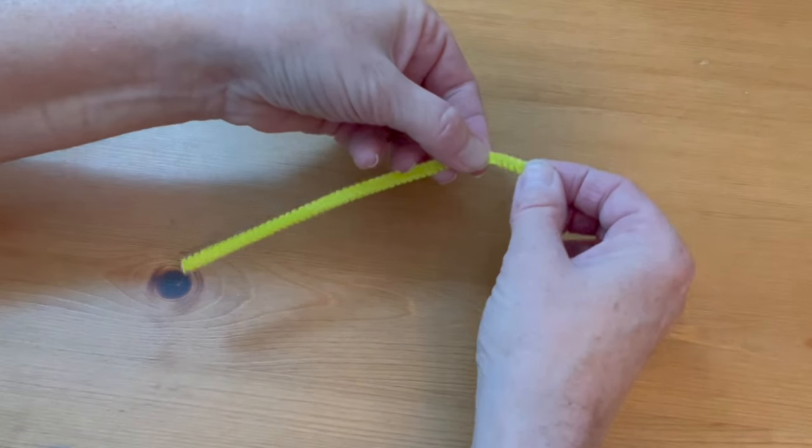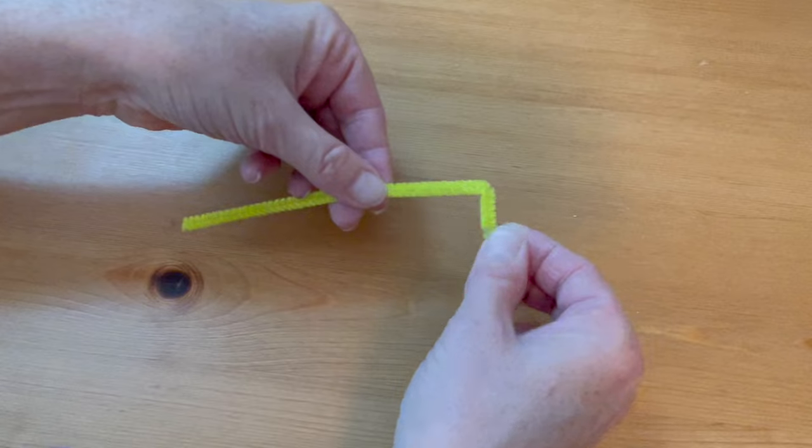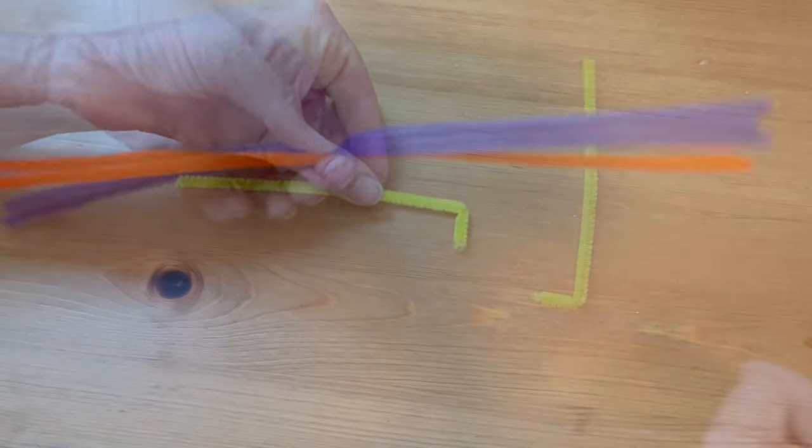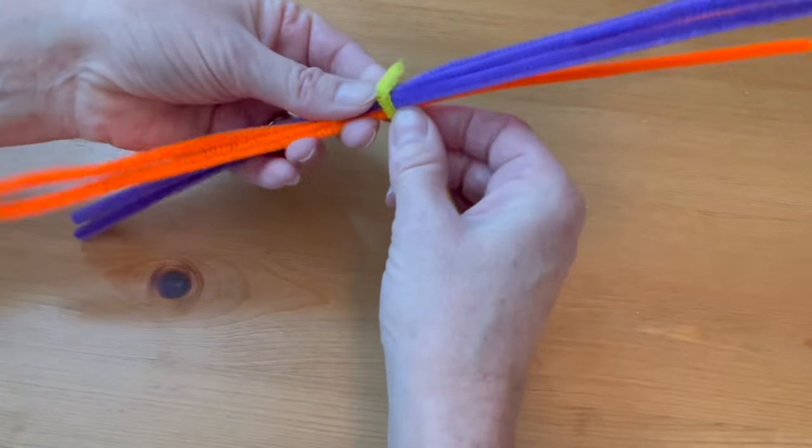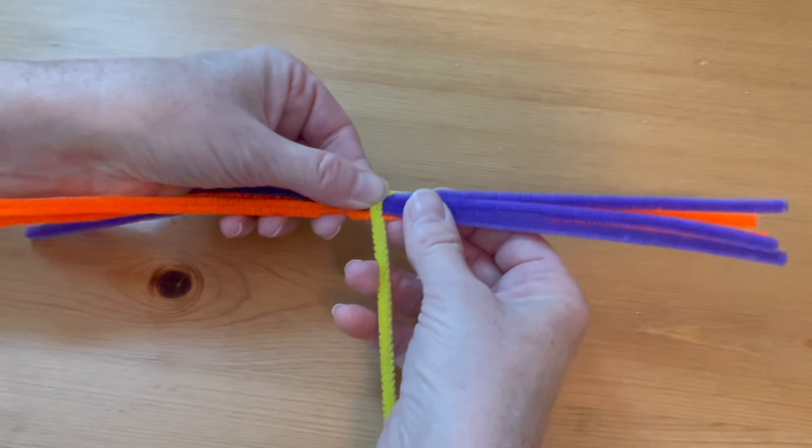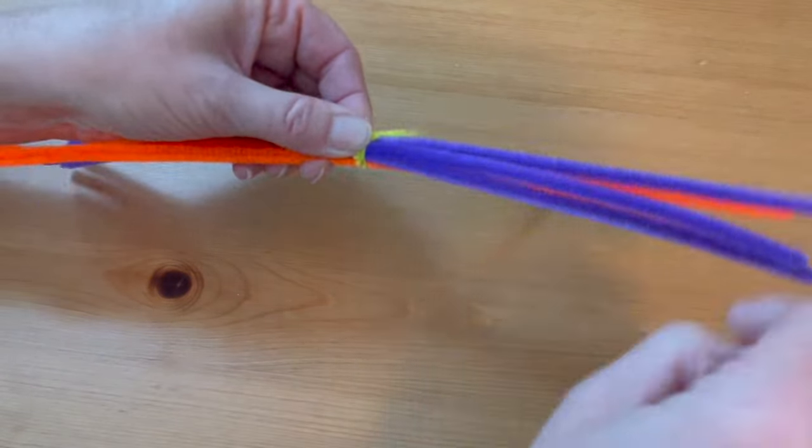At the end of one piece, fold down the end about half an inch at a 45 degree angle. Hold the rest of the pipe cleaners except the green one together. Set the bent end down in the middle of the bundle of pipe cleaners and wrap the longer end around two times to keep everything in place.